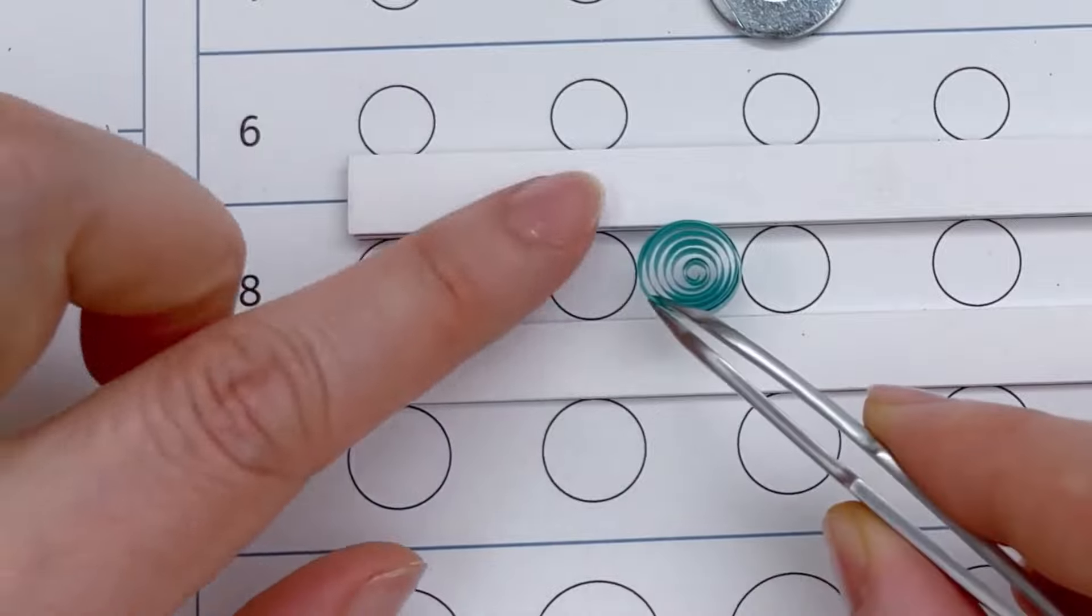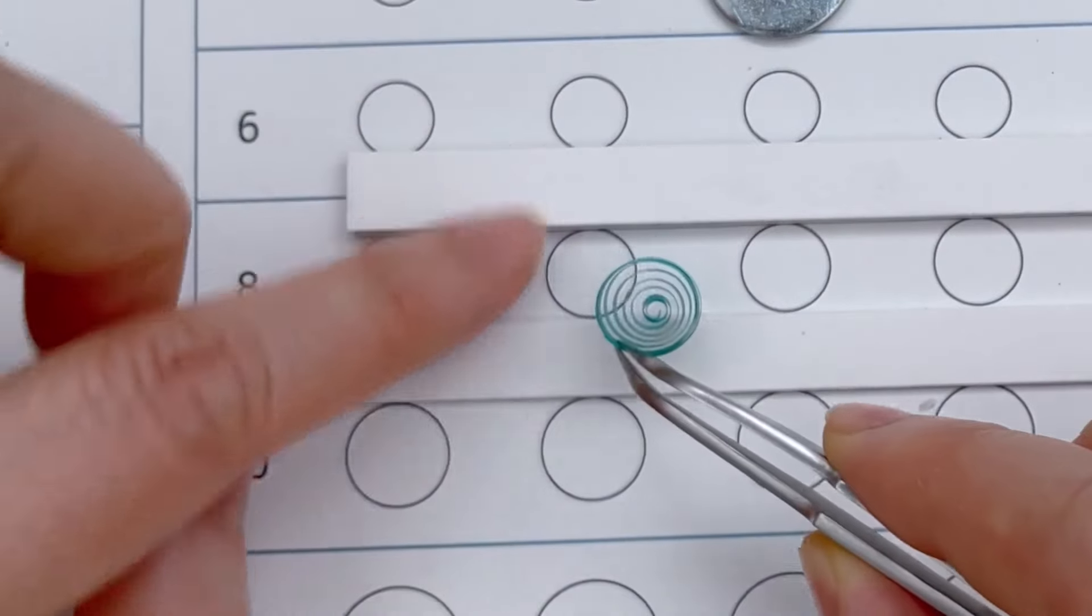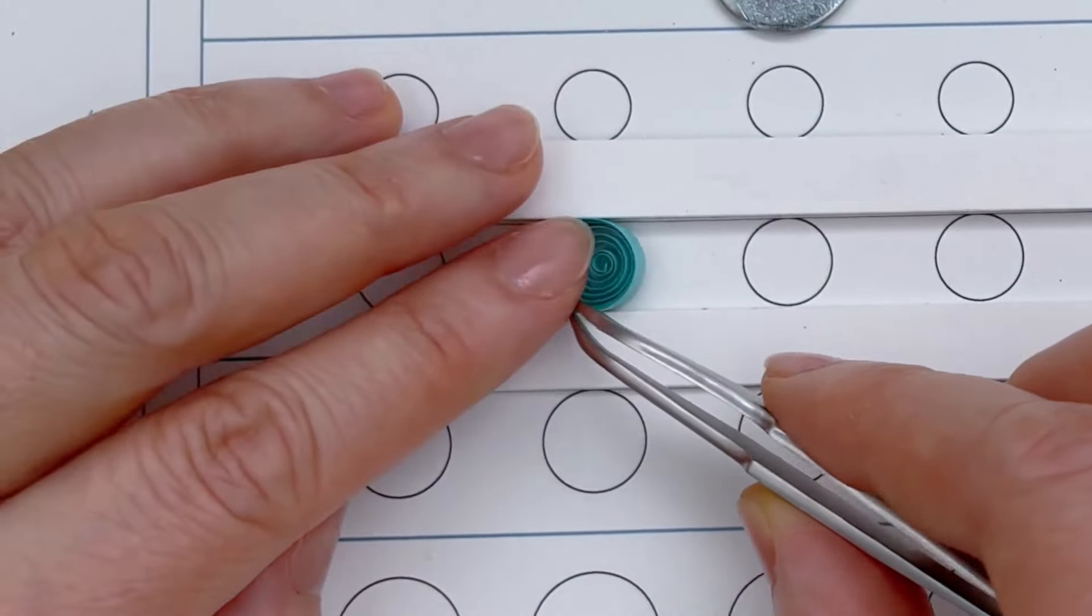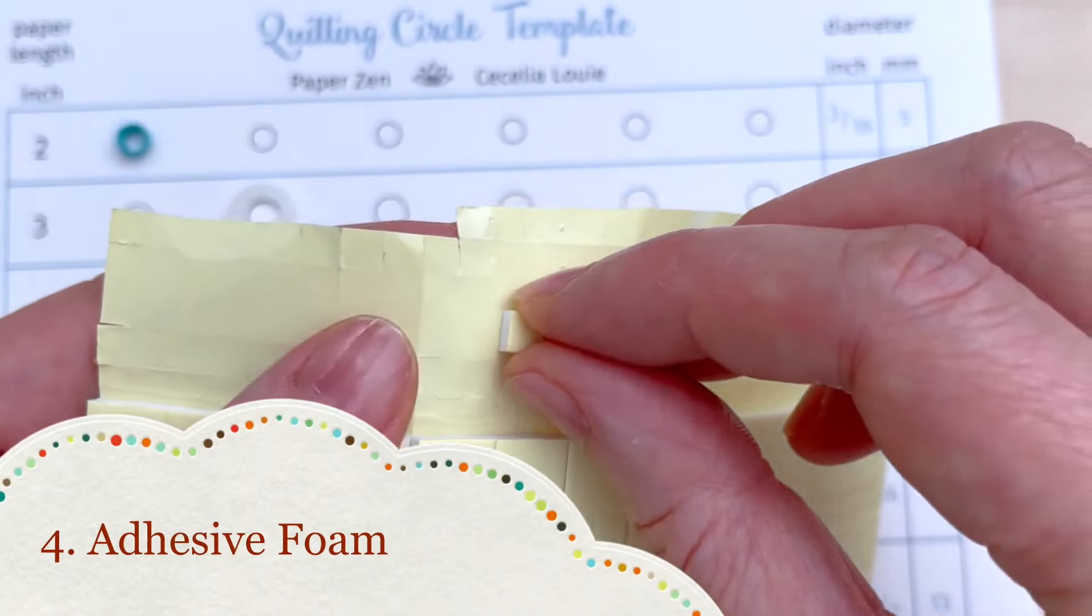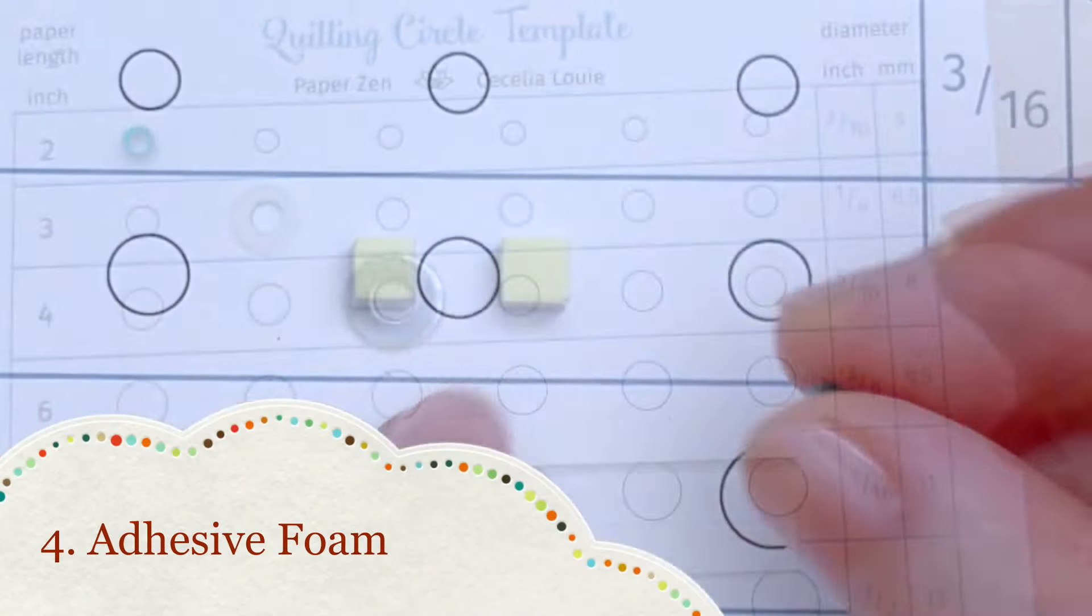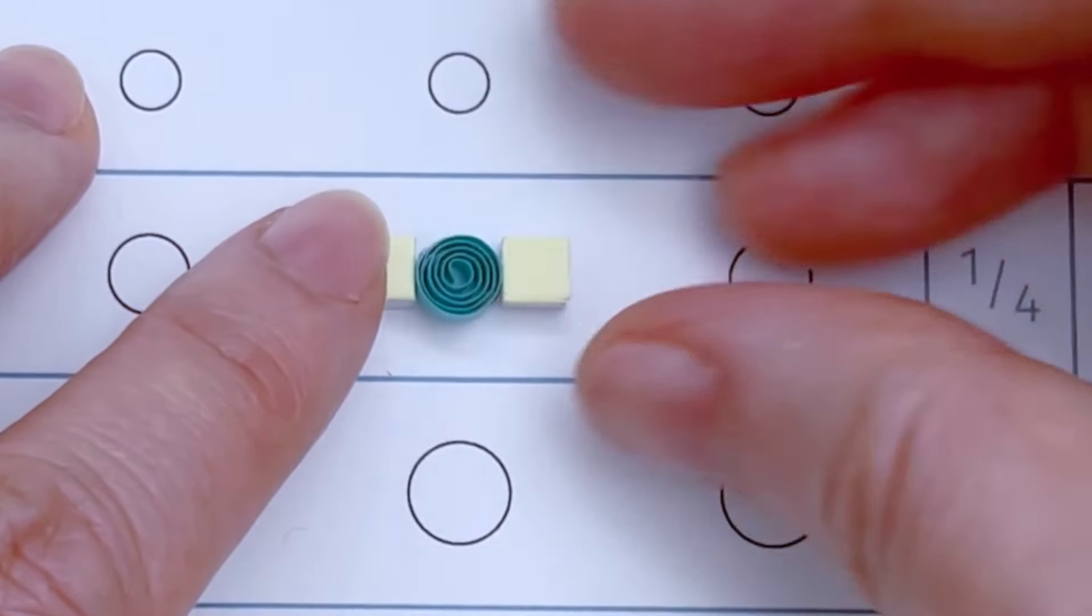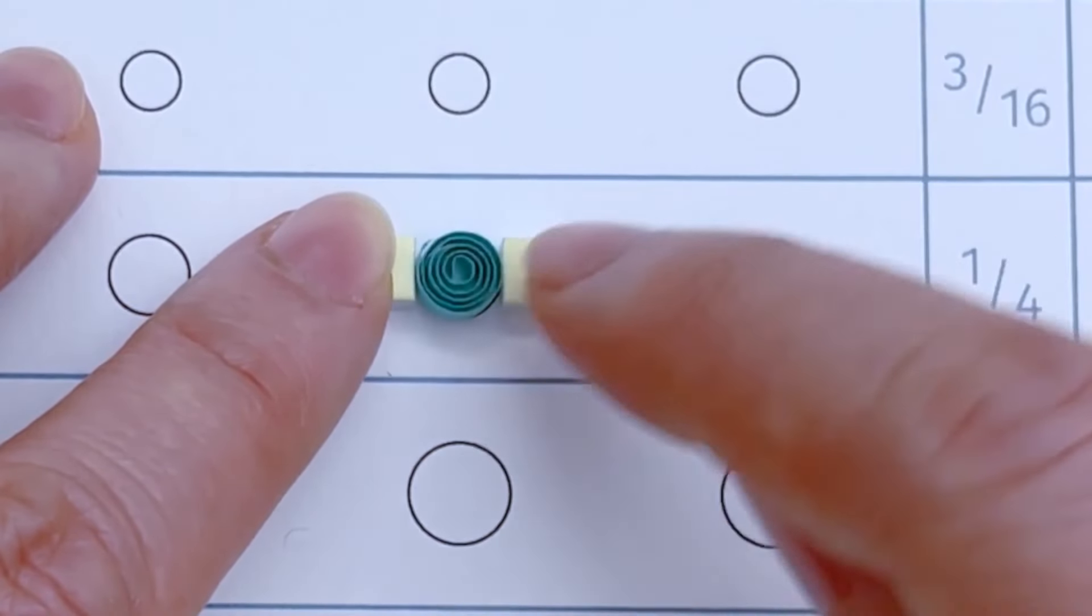For method four, I found adhesive foam squares at the dollar store. Just place two on either side of the circle and allow your coil to expand.